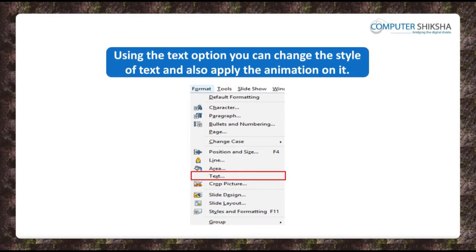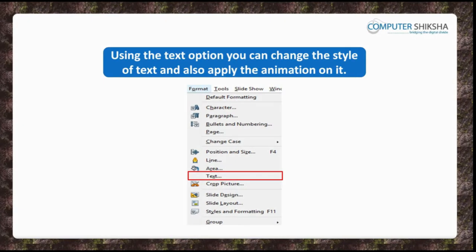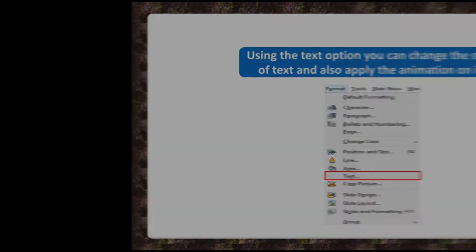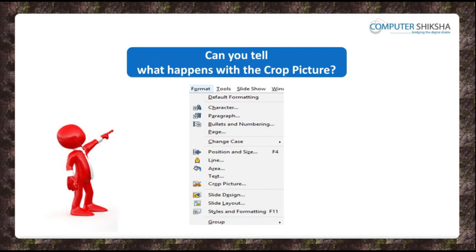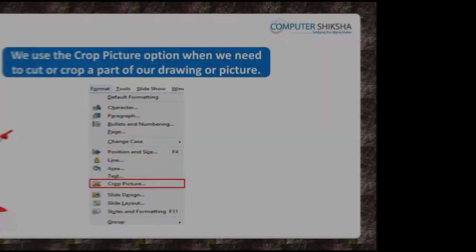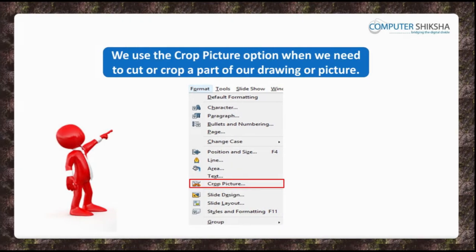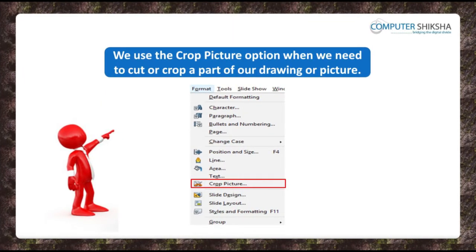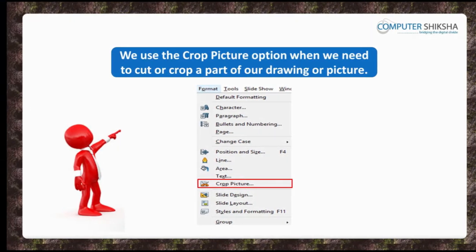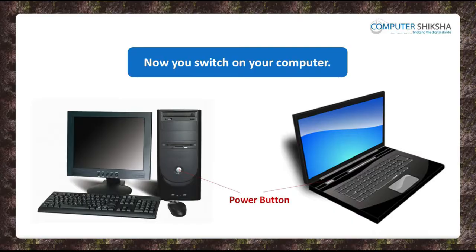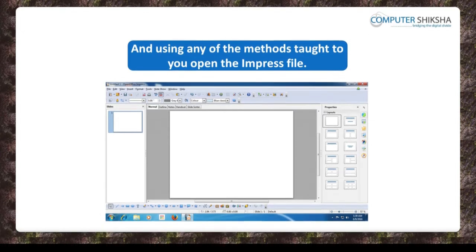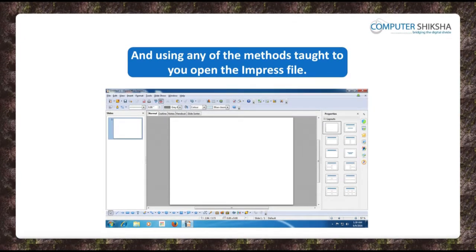You can use it to change the width, height, spacing to border of the text and can also apply word wrap. Why do we use the crop picture option? We use the crop picture option when we need to cut or crop a part of our drawing or picture or make it larger or smaller. Now, all of you switch on your computers and using any of the methods taught to you, open the Impress file.